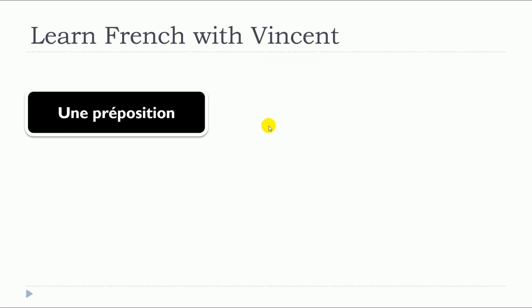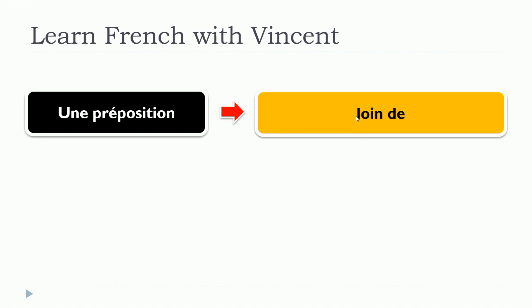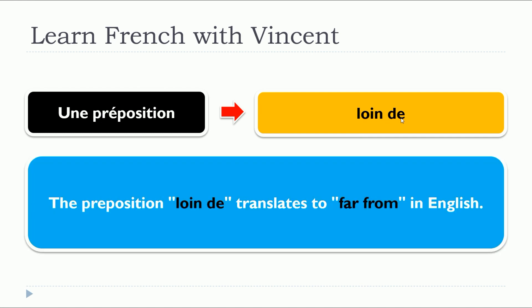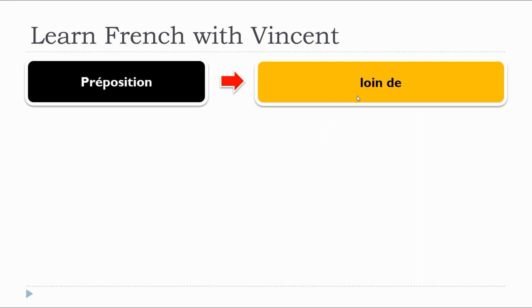So this lesson is about 'loin de'. The preposition 'loin de' translates to 'far from' in English. We will see four examples with 'loin de'.